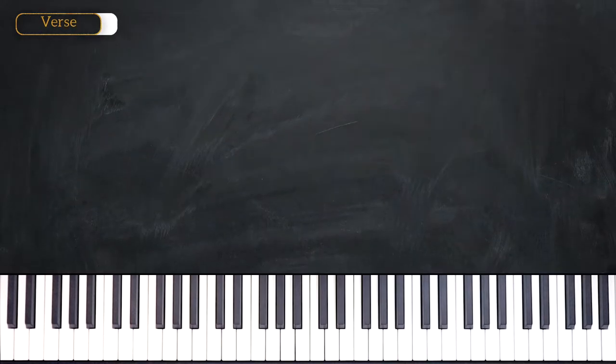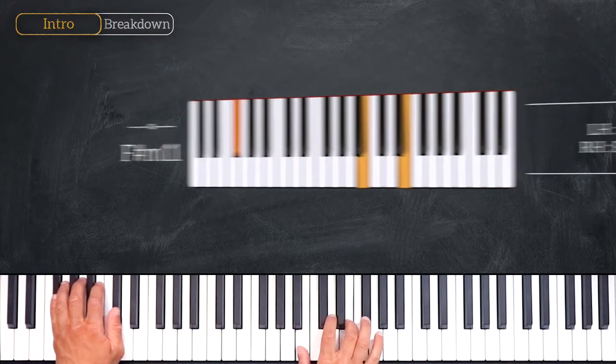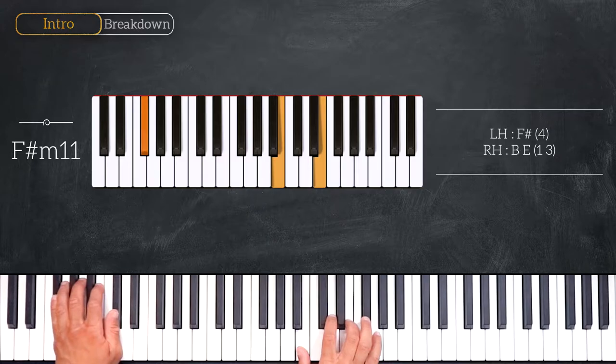Let's break down the chord progression together. We start on this F-sharp minor 11, playing F-sharp on the left hand and B, E on the right hand.